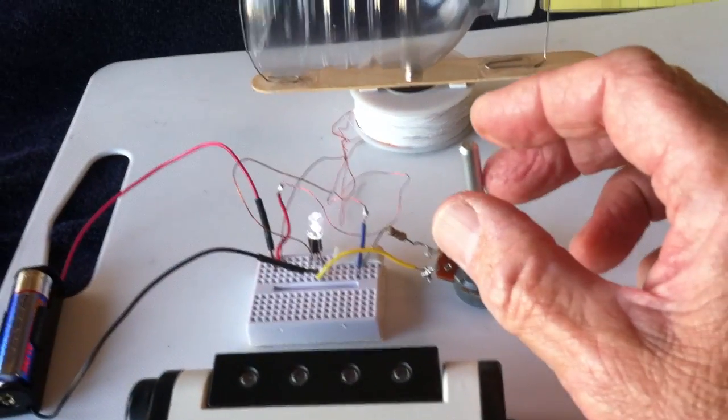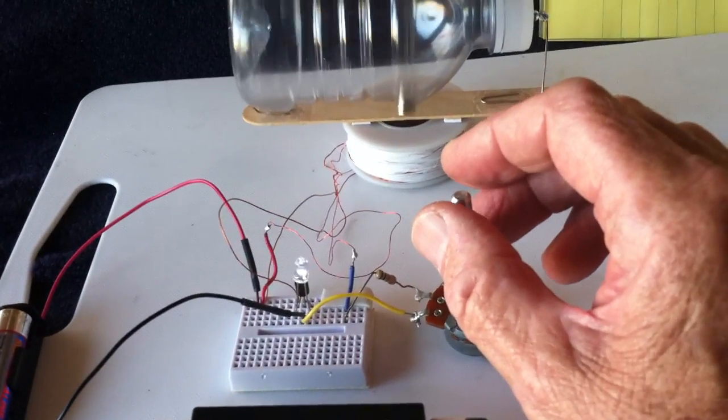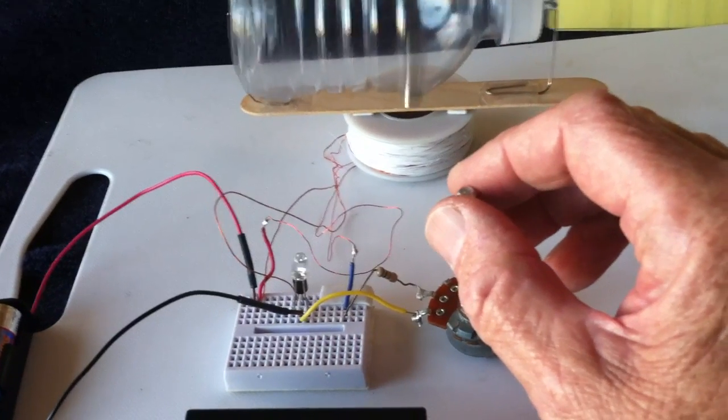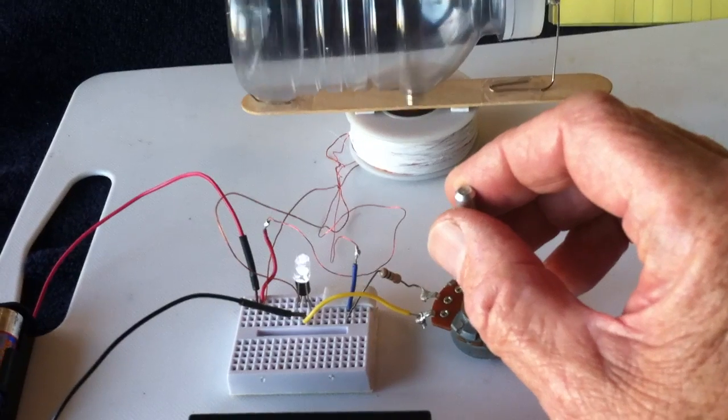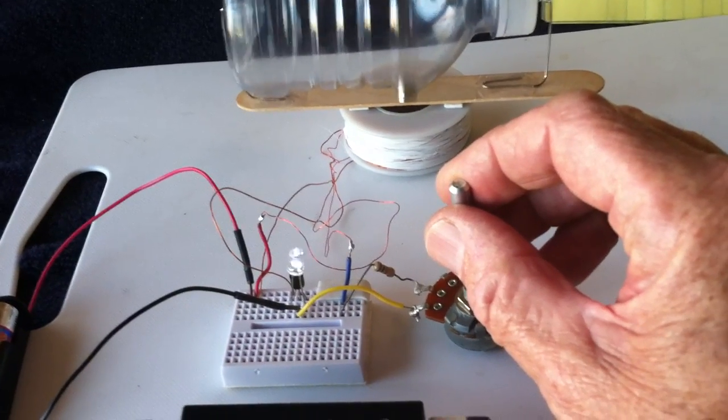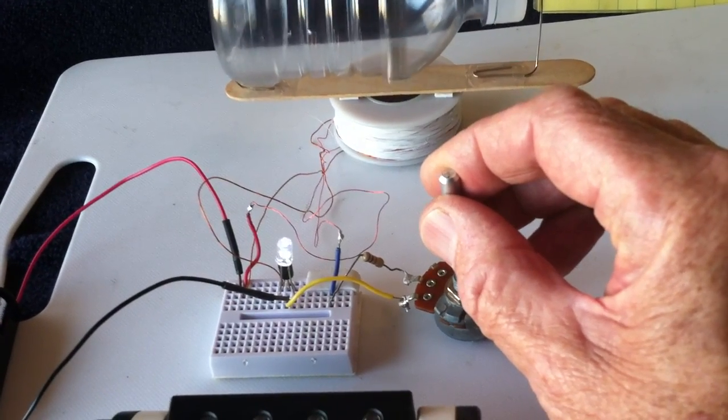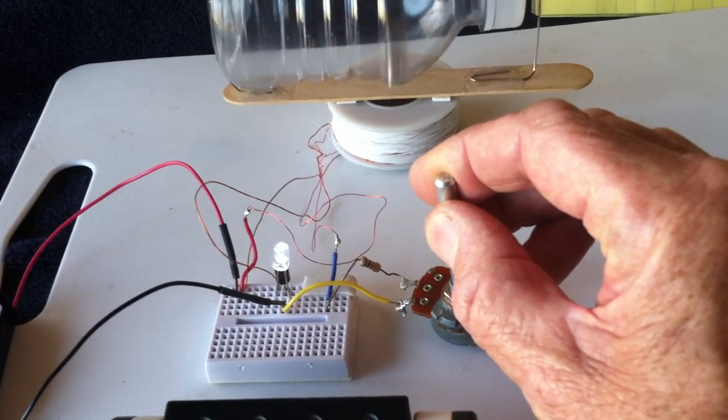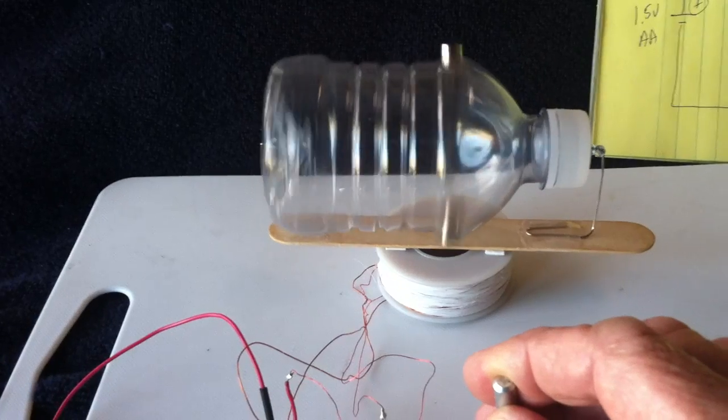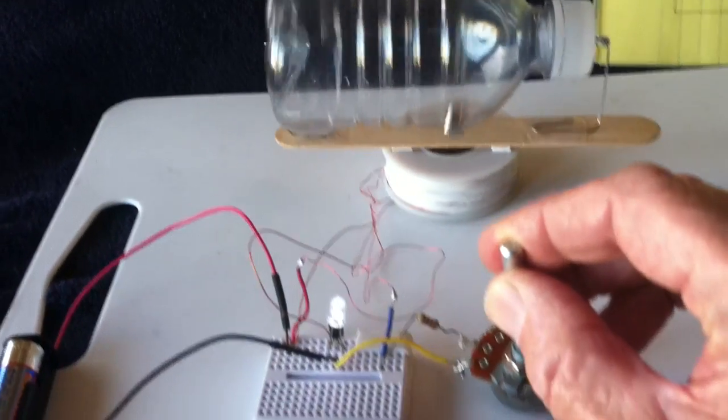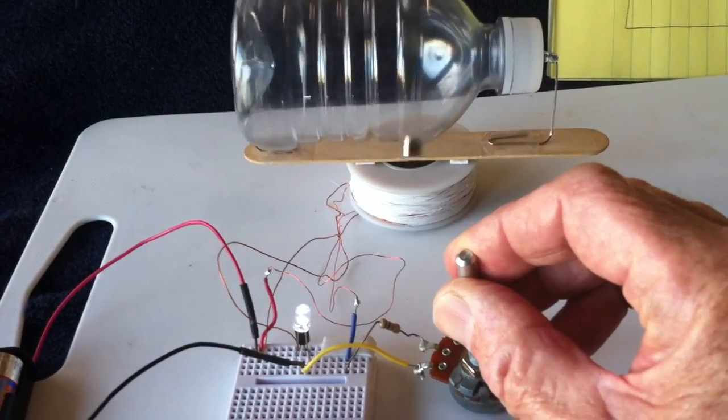Now if I adjust the potentiometer, I can make this go in or out of the triggering. Let me go the other way and make it go to self-oscillation. Now that's just running like a jewel thief. The rotor is going to start to slow down because it's out of sync, so I'm going to crank this back down until it starts to fire.